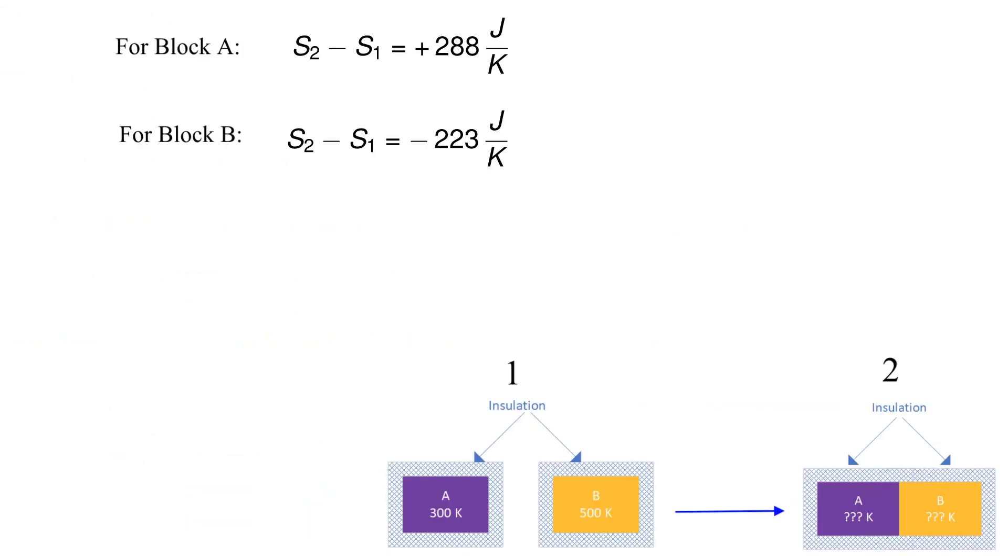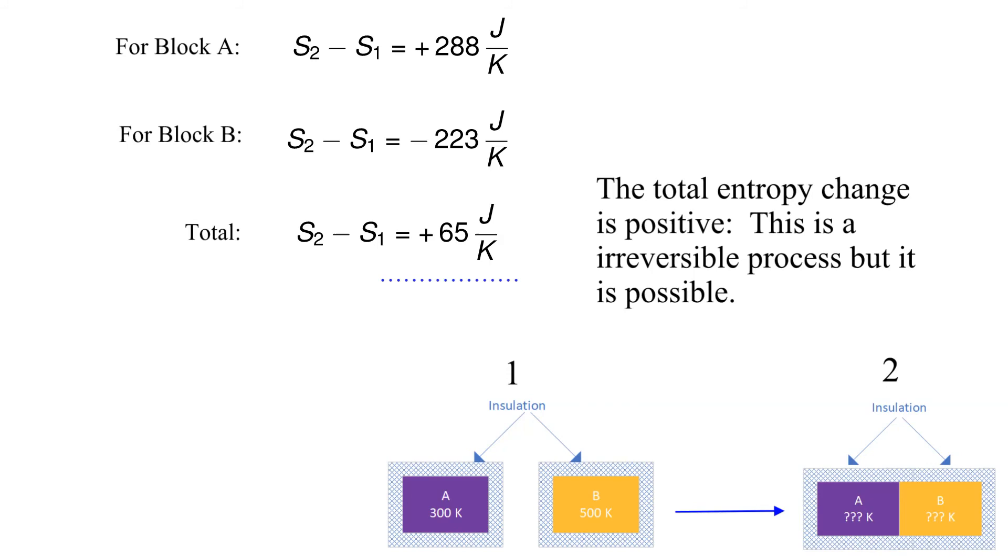Before we wrap up, let's look at the total change in entropy. Summing up the changes for block A and B, we obtain 65 joules per kelvin. A positive change in entropy indicates two things: the process is possible and it is irreversible.